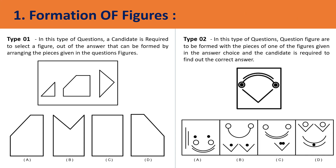Now coming to the first topic: formation of figures. Formation of figures means you will be given some dismantled shapes and you have to figure out which shape can be formed using those dismantled shapes. In type two, you have a figure given completely and you have to identify from four answer options which one makes the exact same figure.